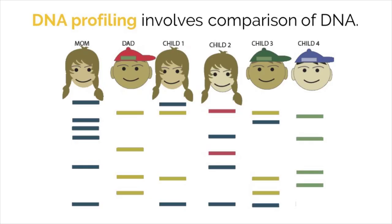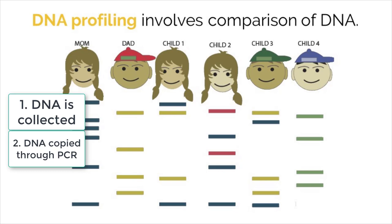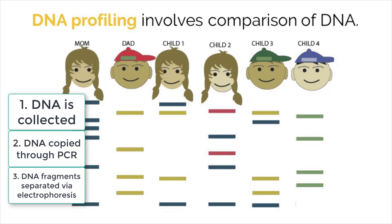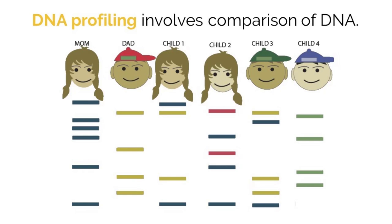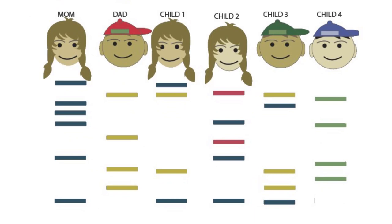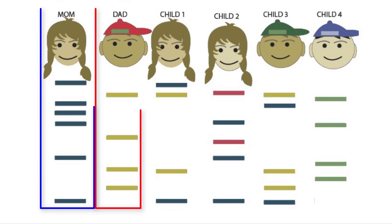Putting these two biotechnology concepts together, scientists can use PCR and gel electrophoresis to carry out different applications in DNA profiling. DNA profiling compares DNA from multiple sources with the end goal of identifying a person. DNA samples are collected, amplified with PCR, and then run on a gel to determine the types of DNA fragments present. People who are more related will share a similar DNA profile, noted by multiple matching bands in an electrophoresis gel. Pause the video and determine which children are related to the parents. This DNA profile shows that children one and three are both children of mom and dad, while child two is a child of only mom, and child four is not related.